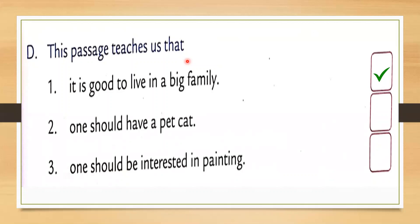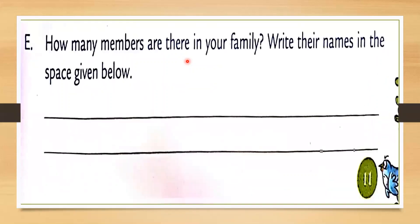The last question is not from the passage — it is a general question you have to answer yourself. How many members are there in your family? Write their names in the space given below. Here you have to tell about your own family and write the names of your family members.